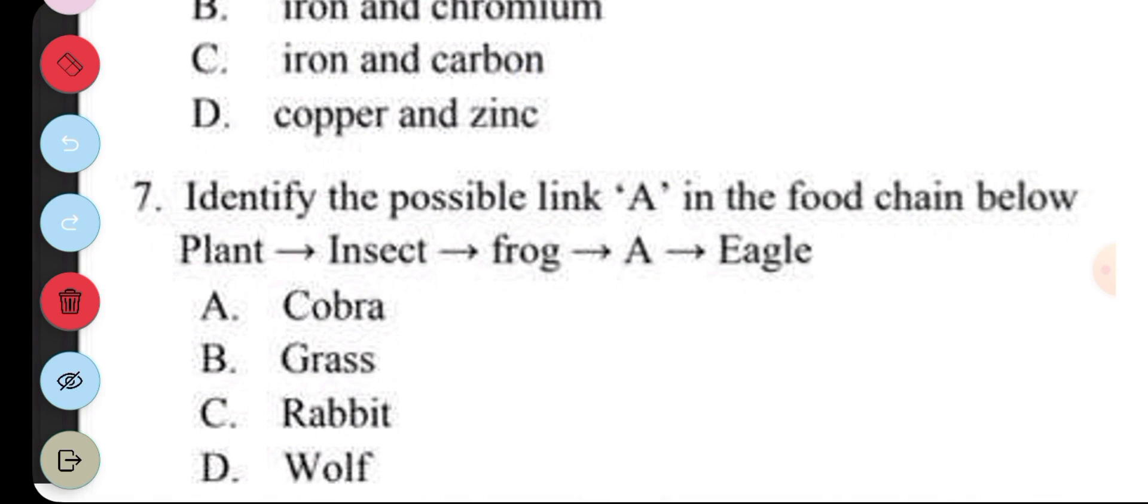Question 7. Identify the possible link A in the food chain below. So we have plant → insect → frog → A → eagle. Which organism best fits at the position where you find A? Looking at it, you know the arrows represent transfer of energy. The plant gives energy to the insect, insect gives energy to the frog, frog gives energy to the cobra, and cobra gives energy to the eagle. So the answer is cobra.